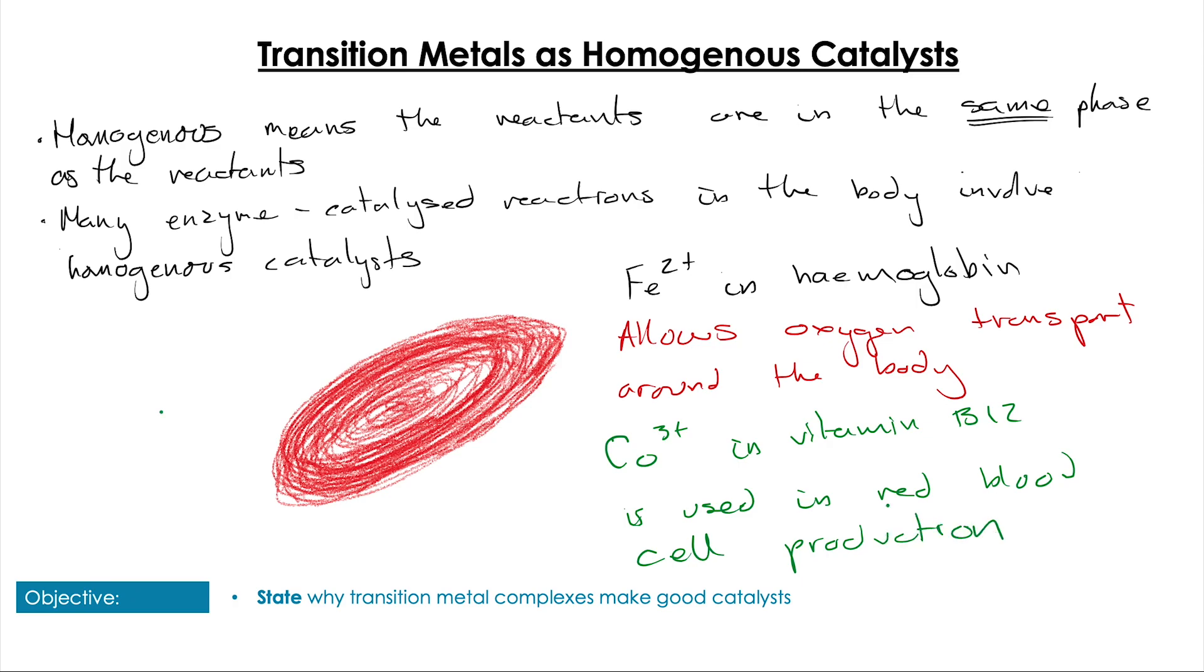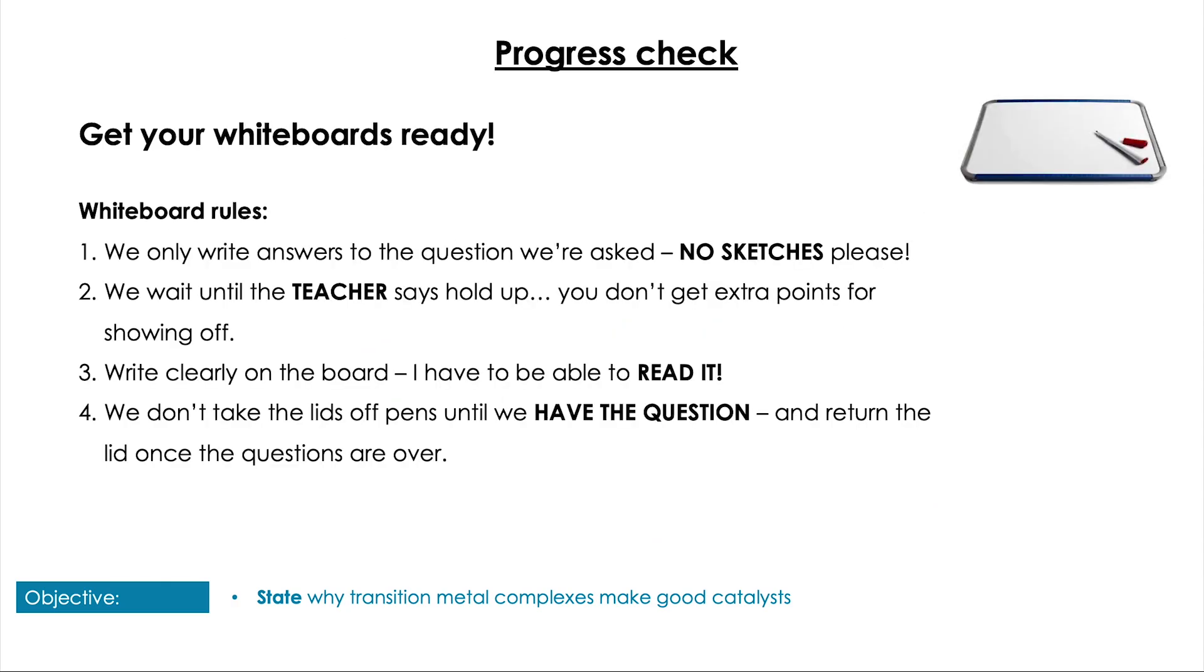In fact, many enzyme-catalyzed reactions in the body are catalyzed by transition metal ion complexes that act as homogeneous catalysts. Two examples both to do with blood include Fe2+ being the ion on which the hemoglobin group is based around—hemoglobin allows for oxygen transport around the body—and also the cobalt 3+ ion in B12, which has an important role in the production of red blood cells.